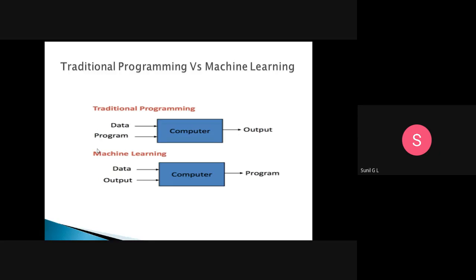In machine learning, we give the input 2 and 4 and the result 6, and the computer system will identify which program it needs to write for that input and output. So it identifies that 2 plus 4 equals 6, meaning it needs to write an addition program. In machine learning, data and output are the inputs, and the computer program is the output of the system.